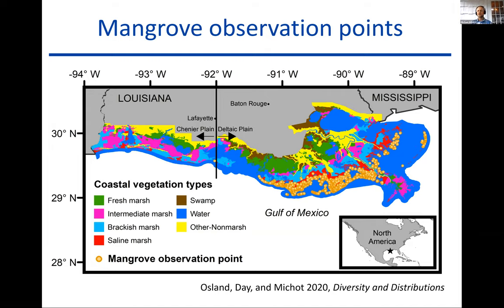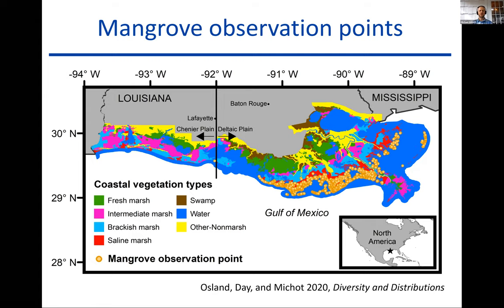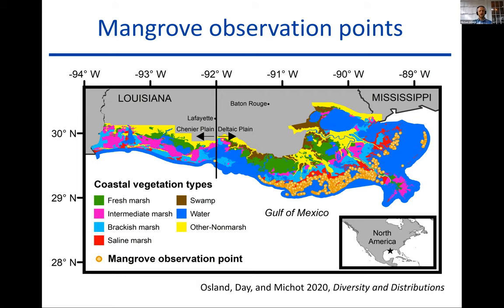One common question for coastal wetland ecologists in Louisiana is: how long have mangroves been there? Thanks to the opportunity for deep literature review during COVID teleworking, I found literature accounts going back to the 17th century of mangroves in Louisiana. The observation records are organized chronologically and include some of the first natural historians to write about Louisiana, who included references to mangroves.